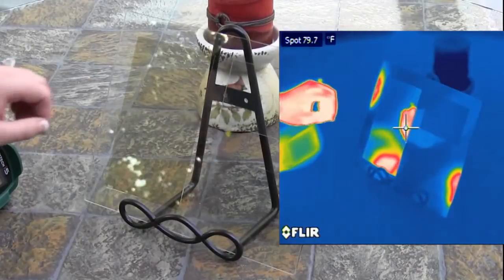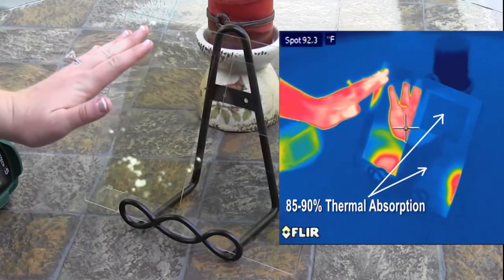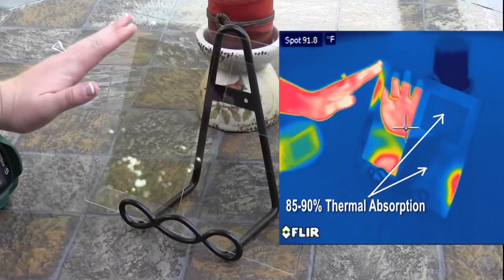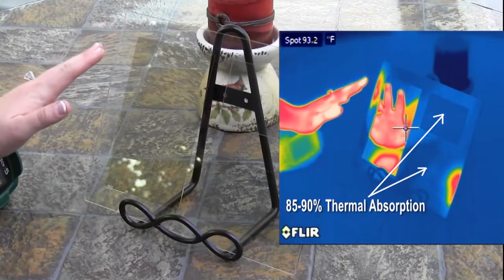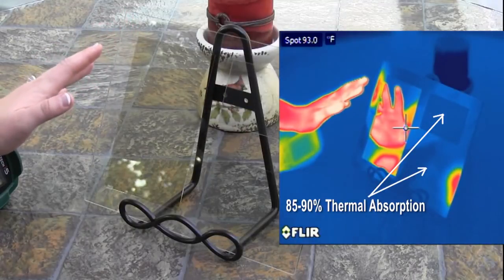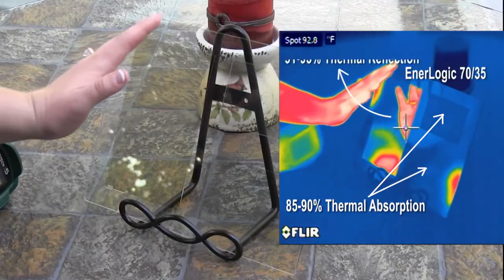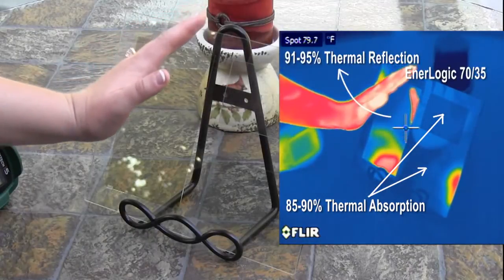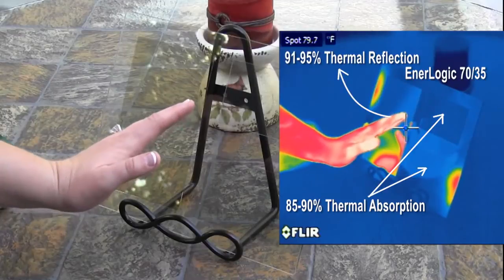Untreated windows, and those treated with ordinary solar control window films, absorb all but about 10-15% of this energy, and lose it to the outdoors. But Interlogic 70 reflects well over 91% of the thermal energy back into the room.